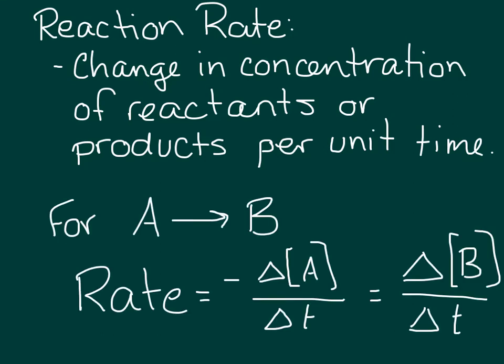For a simple reaction like reactant A forming product B, we can express the rate mathematically as minus the change in the concentration of A over the change in time, or the change of the concentration of B over the change in time.